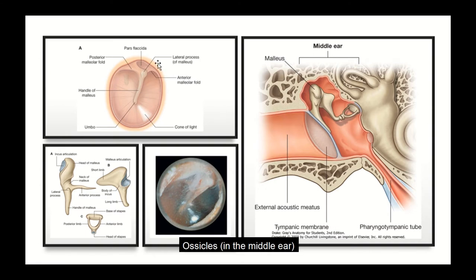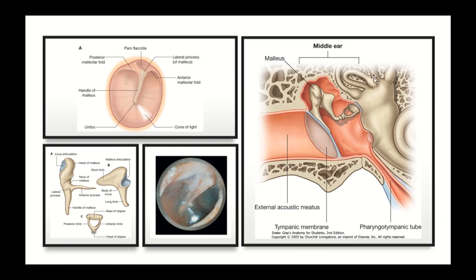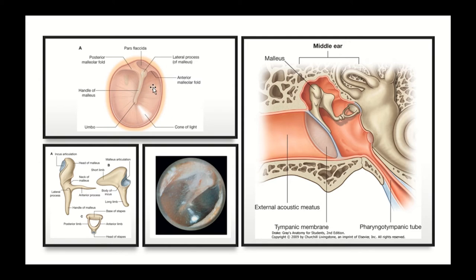Let's have a look at the structure of the tympanic membrane. We're looking at it from the outside — from the side of the external ear canal — in a magnified coronal section. We can see the external ear canal, the tympanic membrane, and the middle ear cavity containing the bony ossicles. The first ossicle is the malleus, which has a long handle tightly attached to the inner aspect of the tympanic membrane, pulling it in. As a result, much of the tympanic membrane is tense — this region is known as the pars tensa.